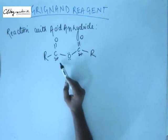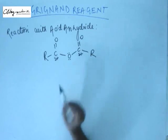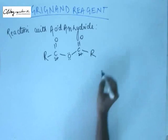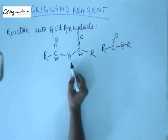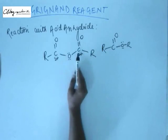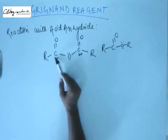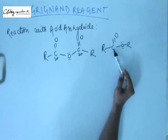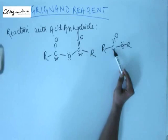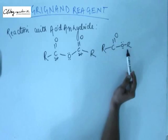Acid anhydride will be less reactive than acyl chlorides — if you had chlorine in place of oxygen, chlorine would be pulling electrons instead of giving them. But acid anhydride will be more reactive than ester, because in ester, oxygen gives its electrons to only one carbonyl group, whereas here oxygen is in cross-conjugation, giving electrons to both carbonyl groups from both sides. So the electron supply to one carbonyl group is less than in ester, making ester the least reactive of all the acid derivatives.